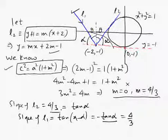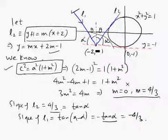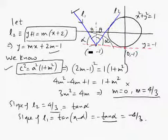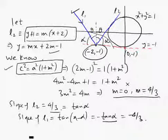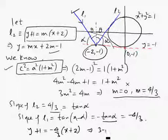So the slope of the incident ray L1 is minus 4/3. Since L1 passes through (-2, -1), using slope-point form: y + 1 equals (−4/3)(x + 2), which simplifies to 3y + 4x equals minus 11. This is the equation of the incident ray.